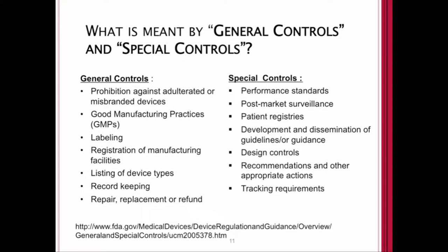What do we mean by general and special controls? General controls include prohibition against adulterated or misbranded devices, good manufacturing practices, provisions for labeling, registration of manufacturing facilities, listing device types, record-keeping controls, and repair, replacement, or refund in the event of recalls. Special controls deal with performance standards, including post-market surveillance, patient registries if needed, development and dissemination of guidelines or guidance, design controls and recommendations, and device tracking.